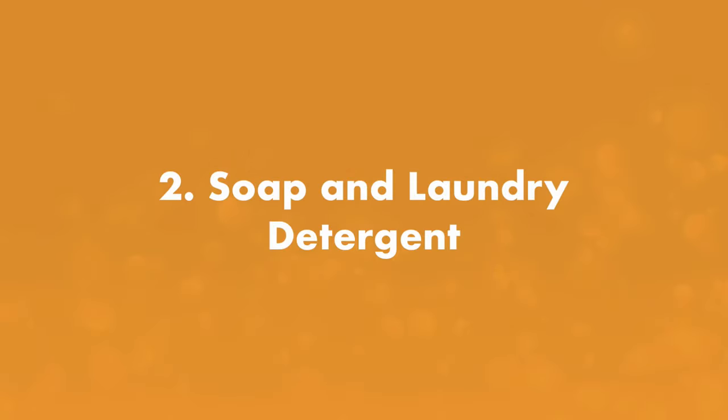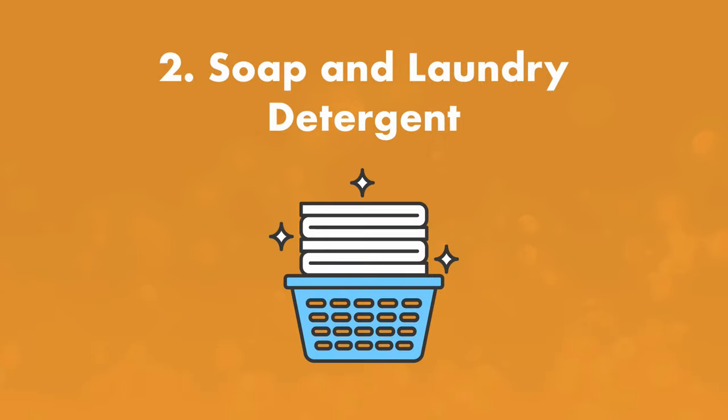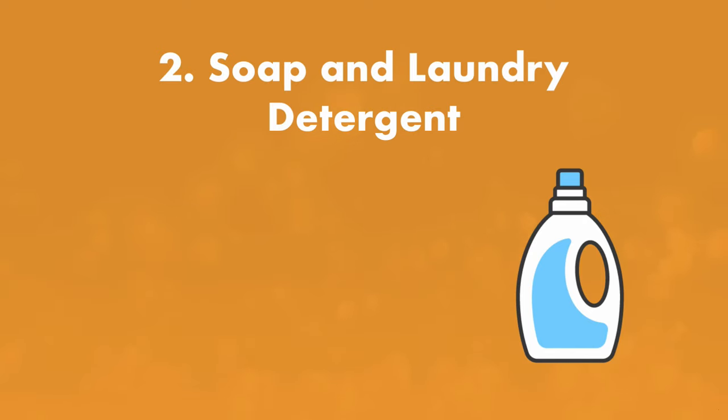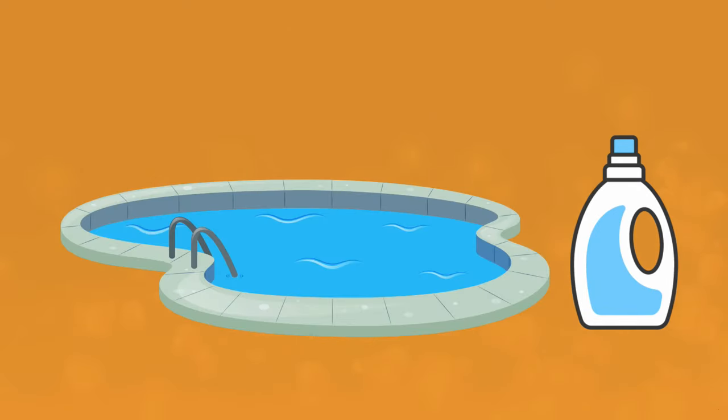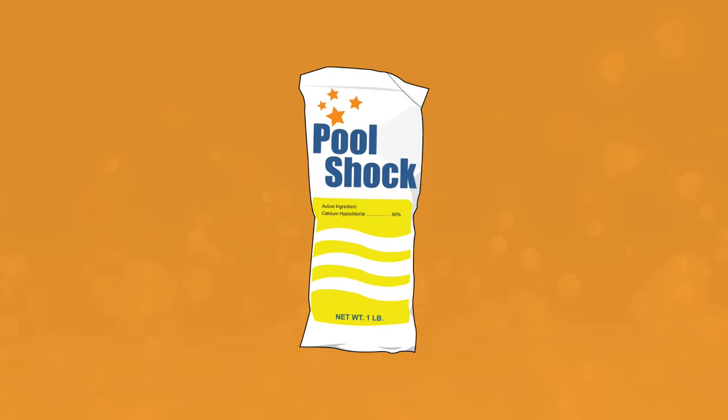Number two: soap and laundry detergent. You know how your clothes still smell fresh after they've been washed? Well, there's detergent residue on them, and that residue can get on your body and then in your pool. Again, rinsing off before swimming helps, but you can also try switching to a fragrance-free laundry detergent. And if you've already got foam, yep, you'll want to shock that pool.